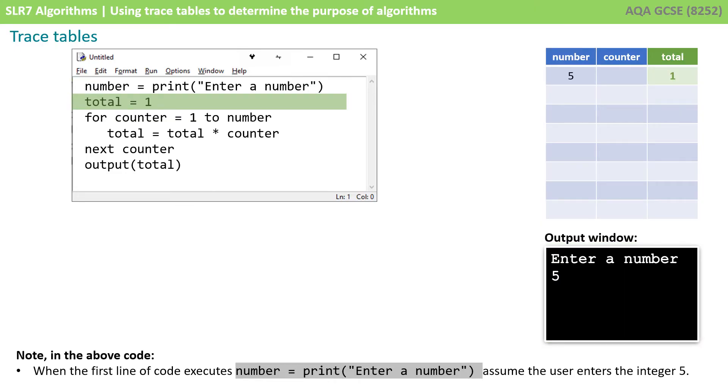The next line is total becomes equal to one, so we've updated that in our trace table. For counter equals one, so we've initialized counter to one. And you can see we've updated that in our trace table to number. So we enter our for loop. Total equals total, which is one, times counter, which is one. Well, one times one is one, and that figure goes into total overwriting what was there. The value of total has changed from one to one. Now you might not update this in the trace table, but to be really accurate, it's probably a good idea to do that, to show that you know the value of one is being replaced by another value of one.